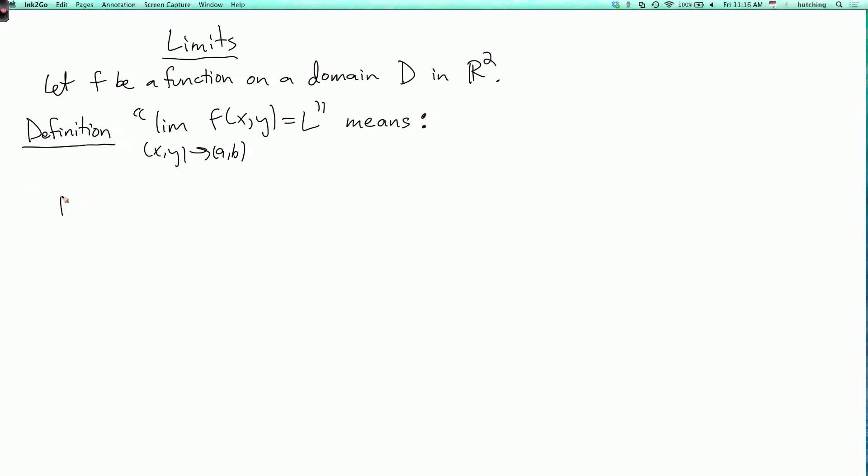It means that for every ε > 0, there exists δ > 0, such that if (x,y) is in the domain D,